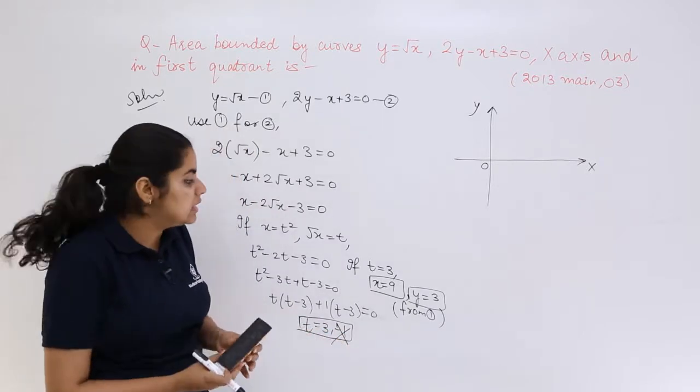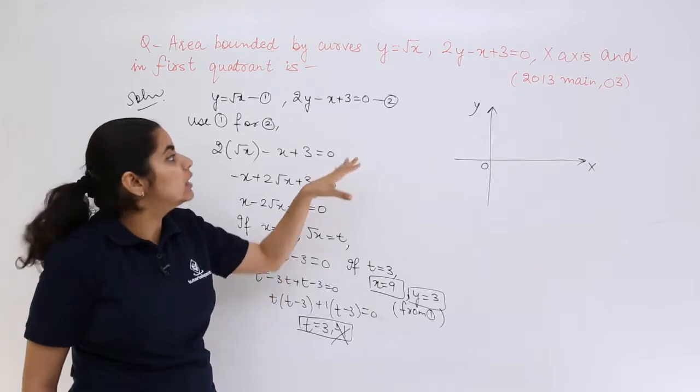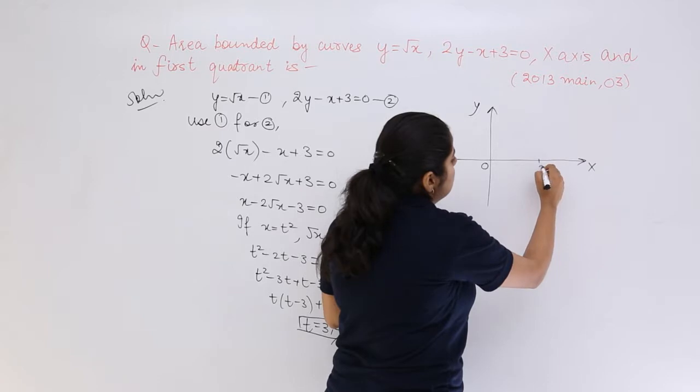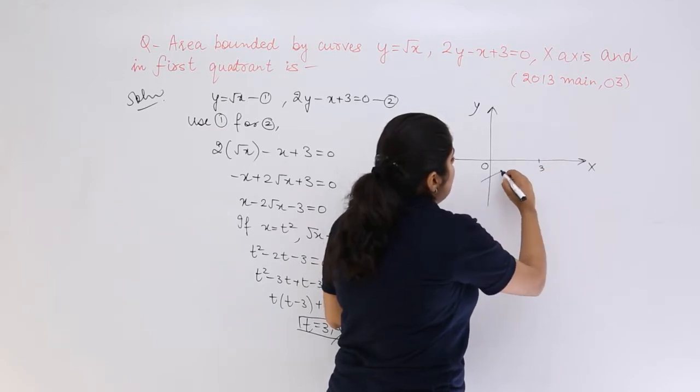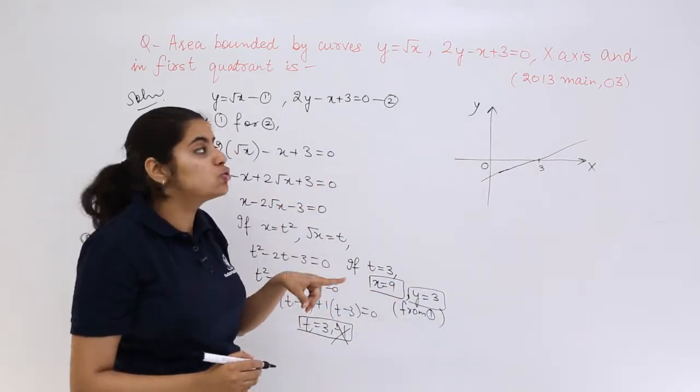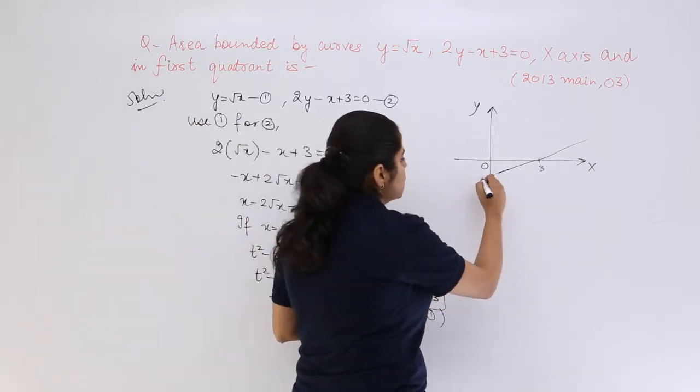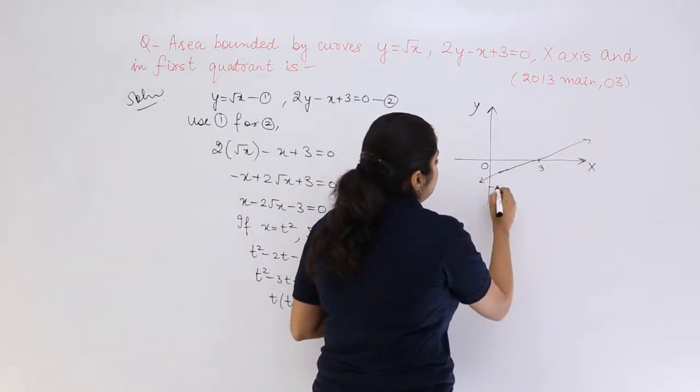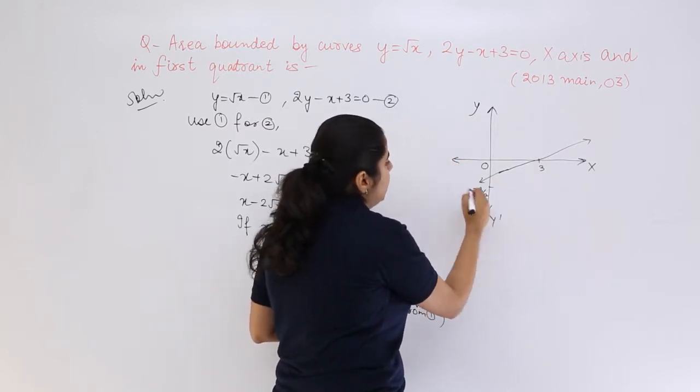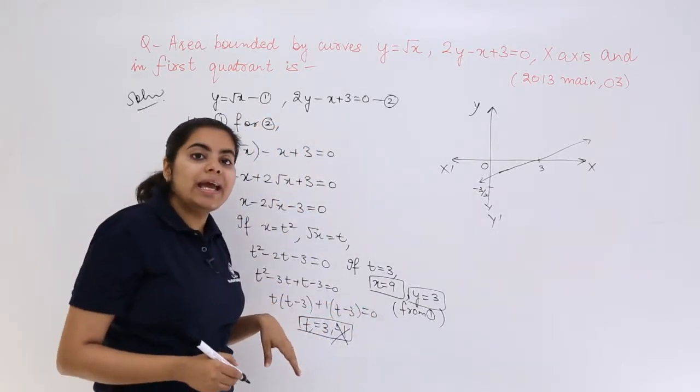That means when I draw the curves, 2y minus x plus 3 equals 0, so here it must be something like 3. And the straight line will be drawn somewhat like this. You know how to plot the lines - it is nothing but can be put in the slope intercept form also. So it is like this. Somewhere here it would be minus 3 by 2 and so on. You can see what are the points of intersection automatically on your own.